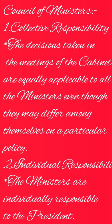Under Article 75.3 of the Constitution, the Council of Ministers shall be collectively responsible to the house of the people. The principle of collective responsibility implies the following. Point one: the decisions taken in the meetings of the Cabinet are equally applicable to all the Ministers, even though they may differ among themselves on a particular policy. Point two: all Ministers jointly share the responsibility for the Government's policies and performance. The Ministers must function as a team in supporting and defending government policies inside as well as outside Parliament.